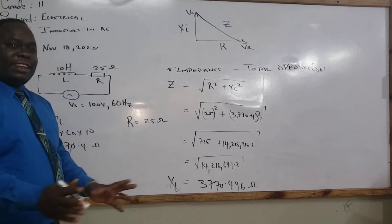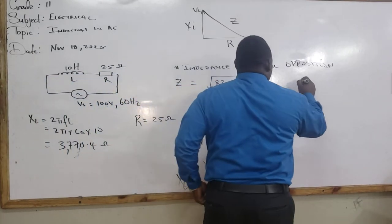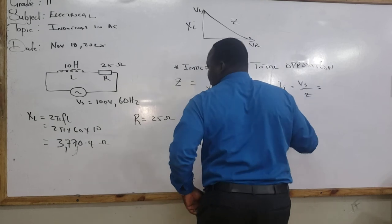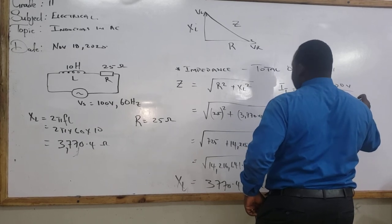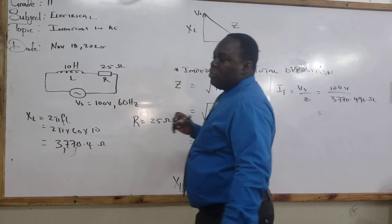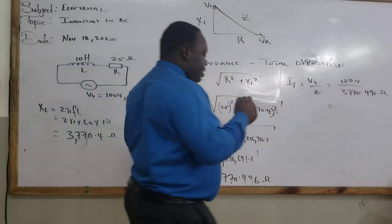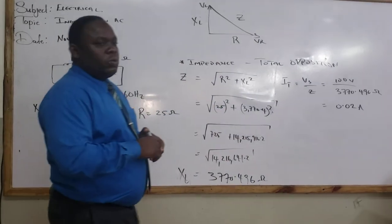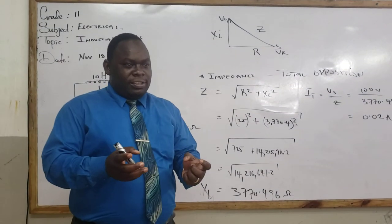If we now need to find a current in the circuit, then we can now find a current by doing what? IT will be equal to Vs over Z. Which is 100 volts divided by 3770.496 ohms. And that will now give us our current. Mr. Fraser, you are working it out. 0.026 amperes. 0.026 amperes.